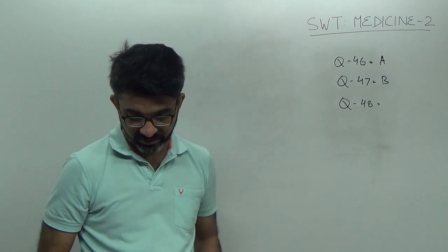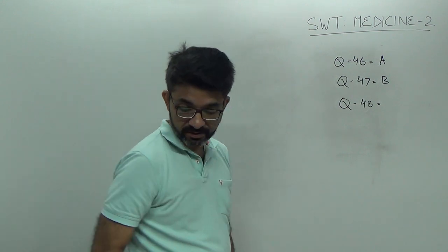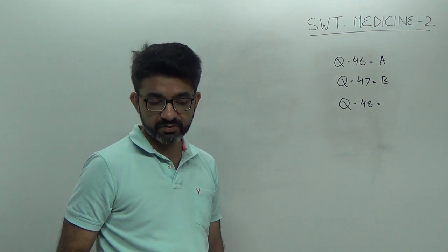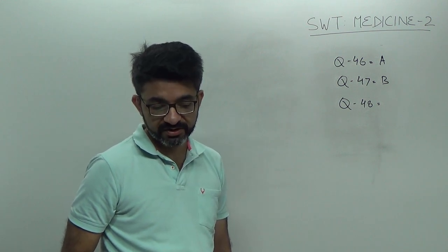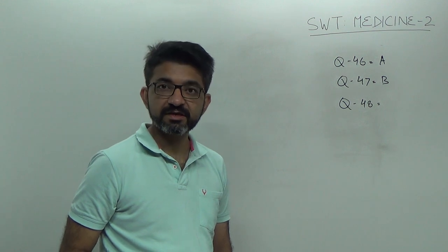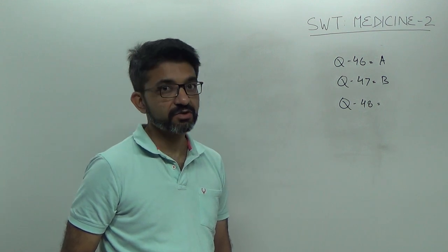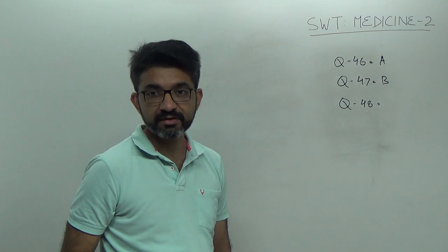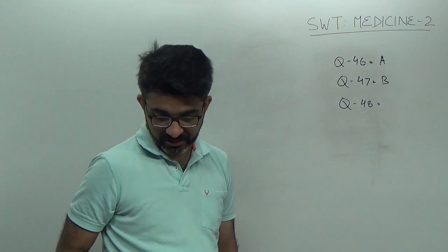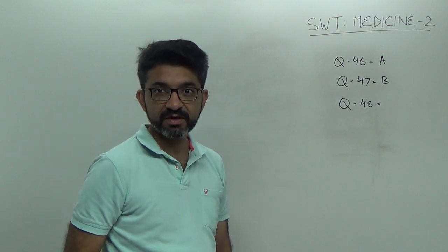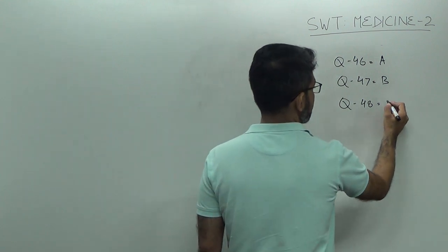Question number 48, Rockall score is used for, it is a score used for upper GI bleed. It is dependent upon age, presence or absence of shock and various other comorbidities. So, Rockall score is used for treatment of upper GI bleed. Answer is A.